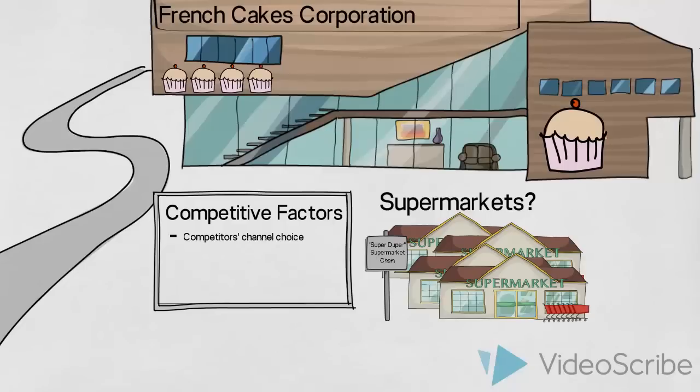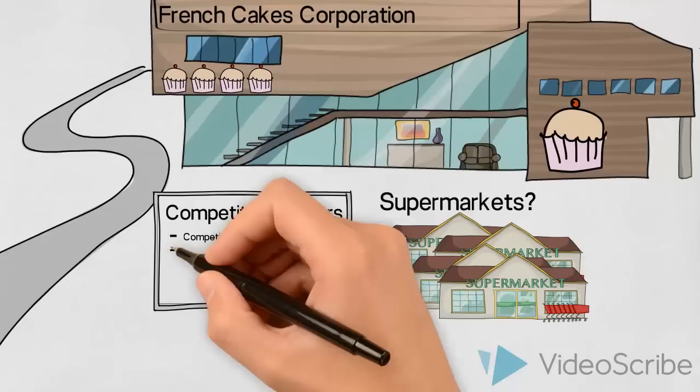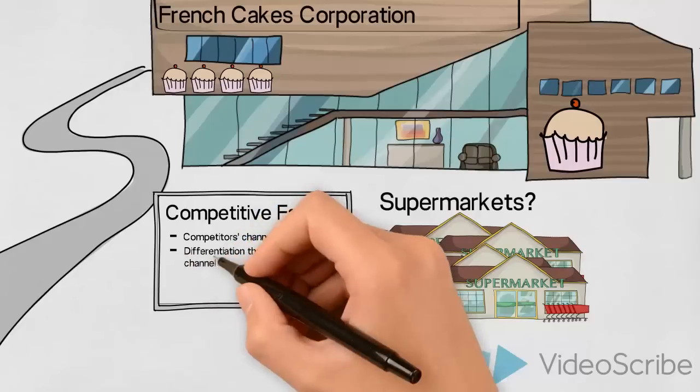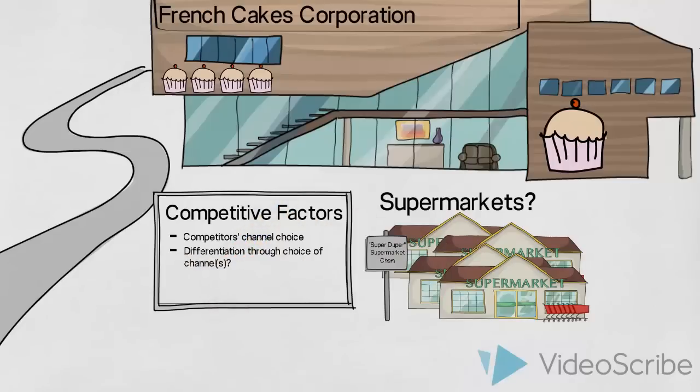And secondly, is it possible to achieve differentiation through choice of channel? Let us imagine that in one particular supermarket chain, consumers are not exposed to the competitors' cakes or desserts.